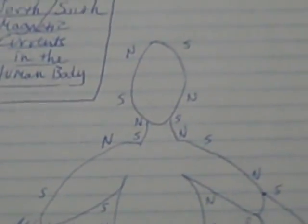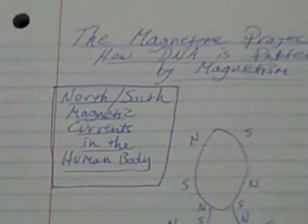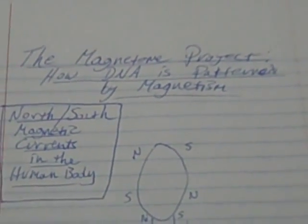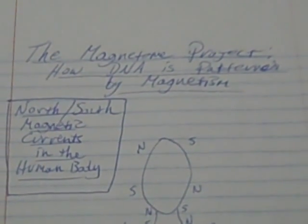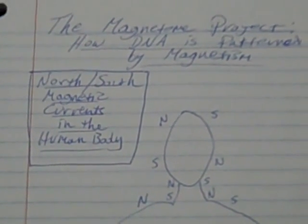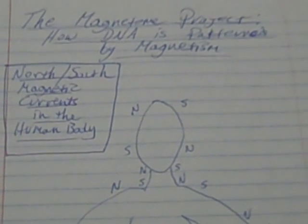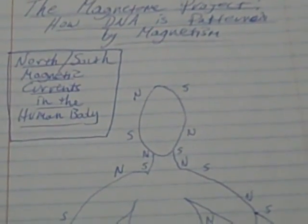What I have here is my little figure, and what you can see is there's north and south polarities all throughout the human body — magnetic polarities around the head, arms, torso, legs, feet, hands, etc. And I'm going to illustrate how DNA is patterned by magnetism and why the magnetome project is more important than the genome project, and give an idea of the general pattern of magnetic current flows that shape, pattern, and form the human body, as well as presumably everything else in nature.